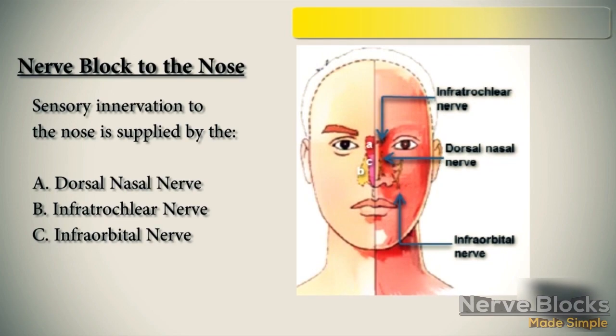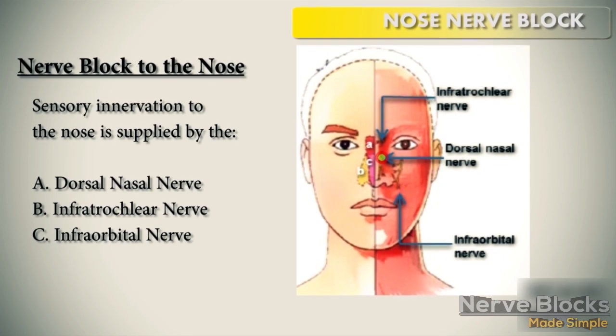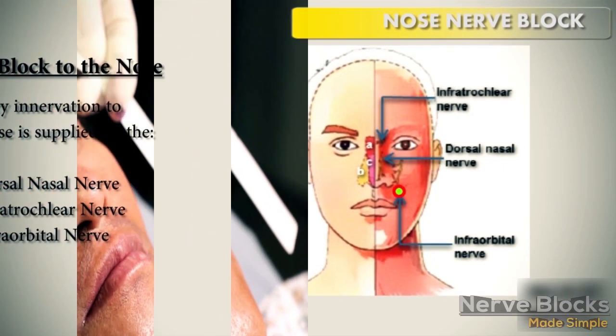Nerve block to the nose. The sensory innervation to the nose is supplied by the dorsal nasal nerve, the infratrochlear nerve, and the infraorbital nerve.